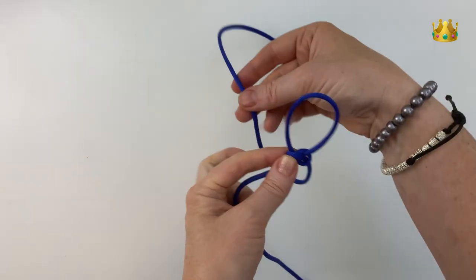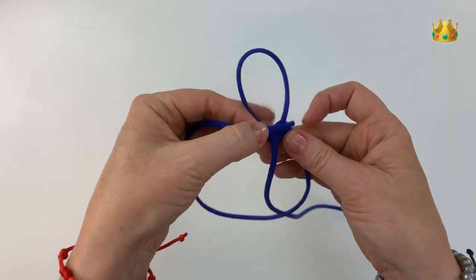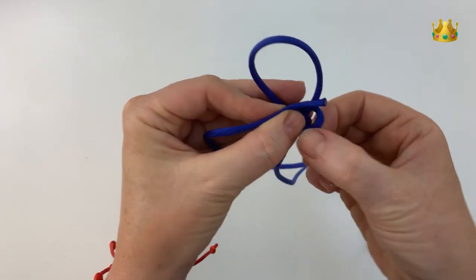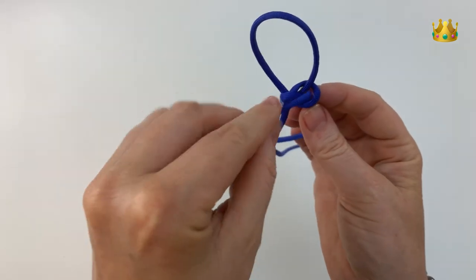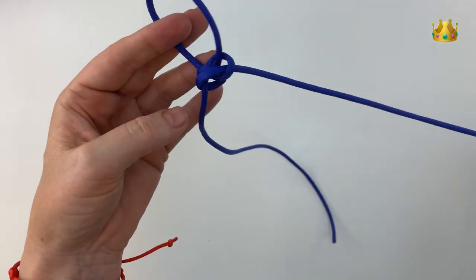Now the right side cord we bring around the back to the left and then place the end down this little loop that we loosened. Pulling it out the back and then working your knot down a bit tighter.